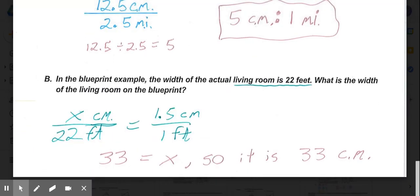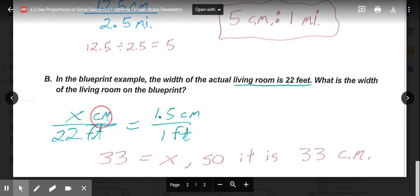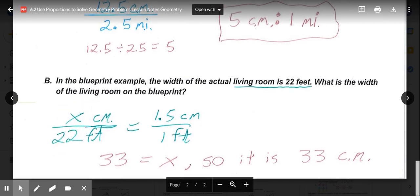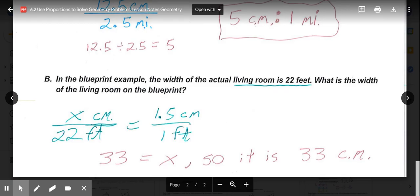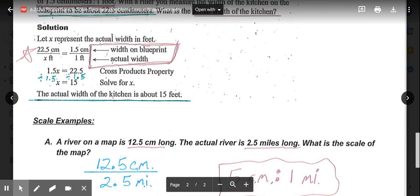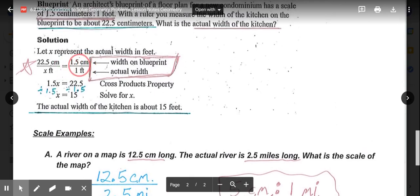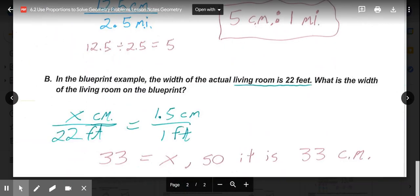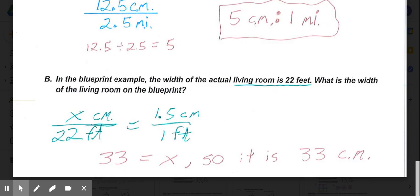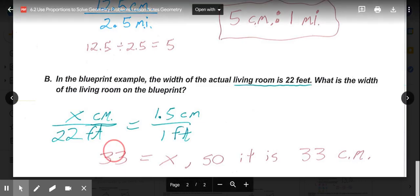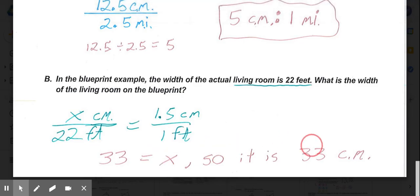In part B, the blueprint example, we're looking back at it. In the blueprint example, the width of the actual living room is 22 feet. What's the width of the living room on the blueprint? In this case, our blueprint was on top. So we're trying to figure out what that width was in centimeters. In real life, we knew it was 22 feet. So X/22 equals, and we're going to use that scale from the blueprint example up here, where the scale was 1.5 centimeters to 1 foot. So that side is 1.5 centimeters over 1 foot. Cross multiply, 1.5 times 22 is 33, so 33 equals X. So that tells us on the blueprint, the living room's width is 33 centimeters.